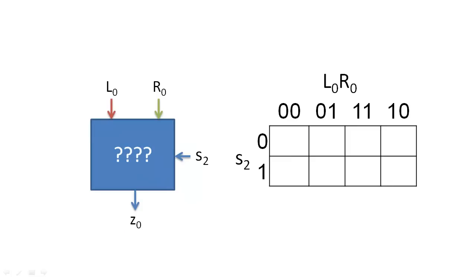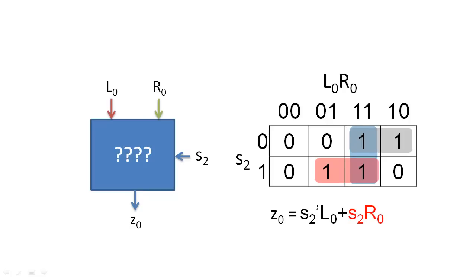To create a multiplexer, we want to use S2 to select between L0 and R0. When S2 is 0, the output will equal L0. When S2 is 1, the output will equal R0. We can derive a minimal expression from our k-map by selecting the two essential prime implicants.